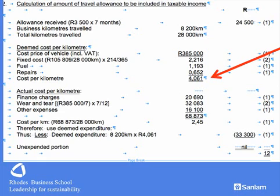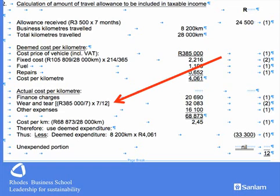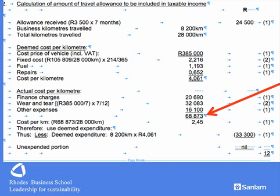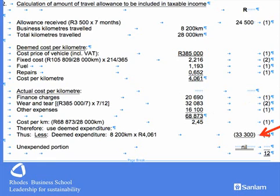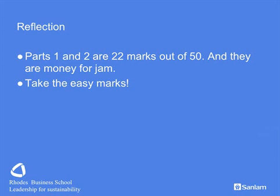We do the same calculation based on actual expenses. Finance charges are fully deductible. Wear and tear is worked out on 7 years, prorated for 7 months out of 12. Adding in other expenses gives total expenses for the year, divided by 28,000 kilometres to get a rate of R2.45 per kilometre. That is lower than the deemed expenditure rate, so we elect to use deemed expenditure: 8,200 kilometres at R4,061 per kilometre. That's a very easy 12 marks. We've now done 22 marks out of the possible 50 — really money for jam.